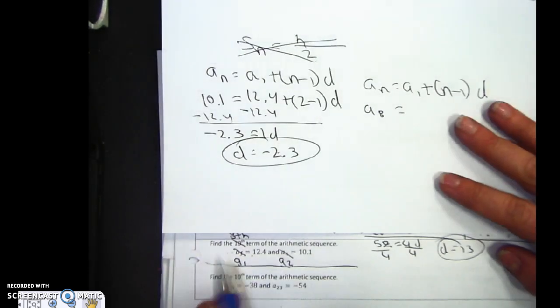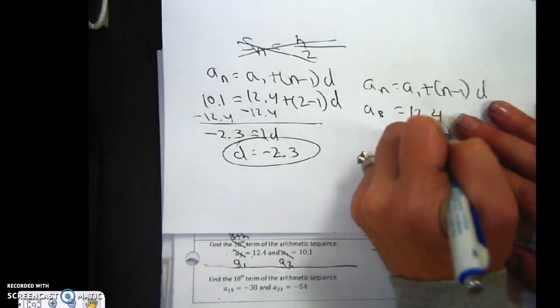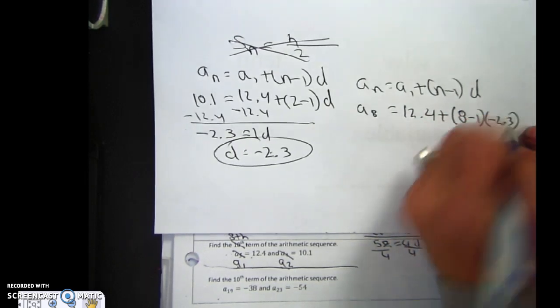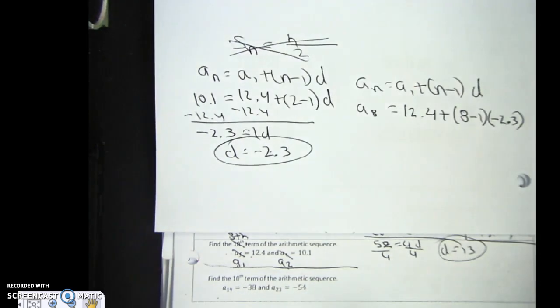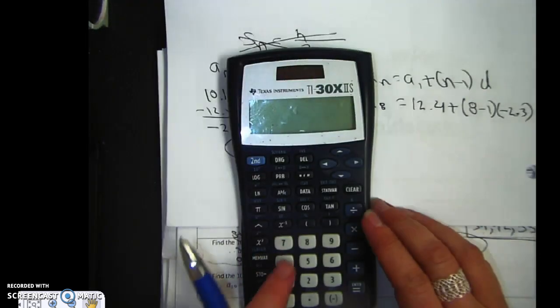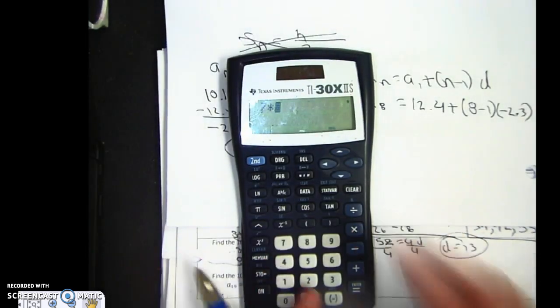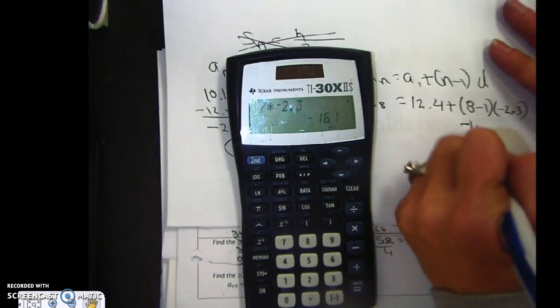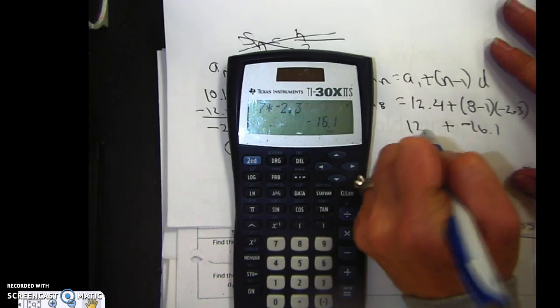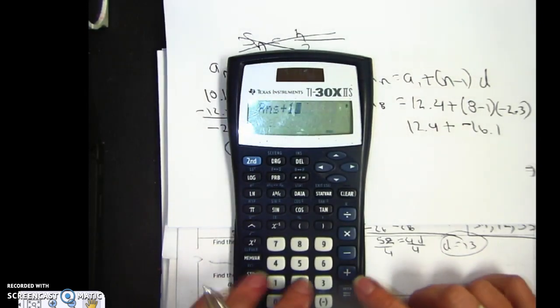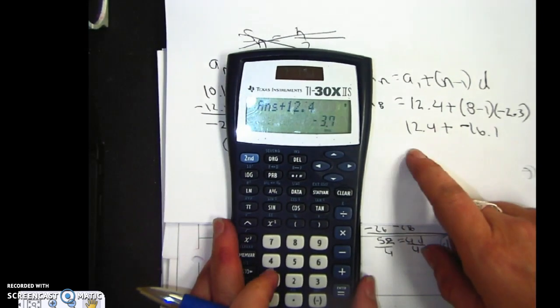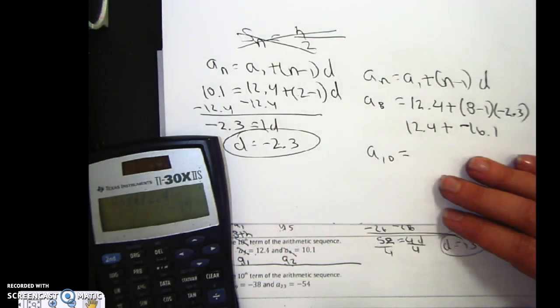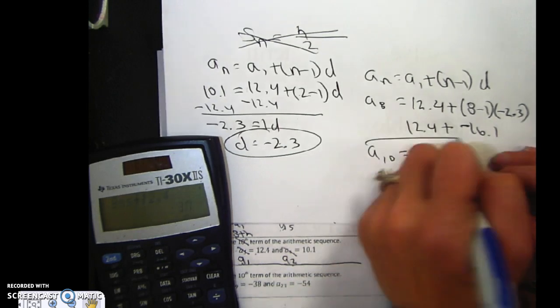Now what I'm going to do is I'm trying to find my eighth term. I'm still going to use my fake first term to find my eighth term, and I know the pattern. Now I'm going to pick up the calculator. 8 minus 1 is 7 times negative 2.3 is negative 16.1 plus 12.4. And I got negative 3.7, but it's not my eighth term. It's my tenth term.